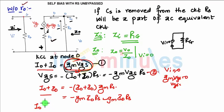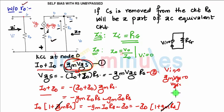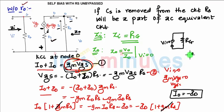Taking io and id common, we get io times (1 + gm·Rs) equals minus gm·id·Rs minus id, which becomes minus id times (1 + gm·Rs). Looking at both sides, the factor (1 + gm·Rs) cancels, leaving io equals minus id.